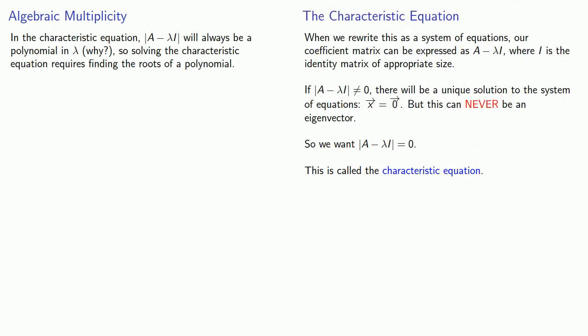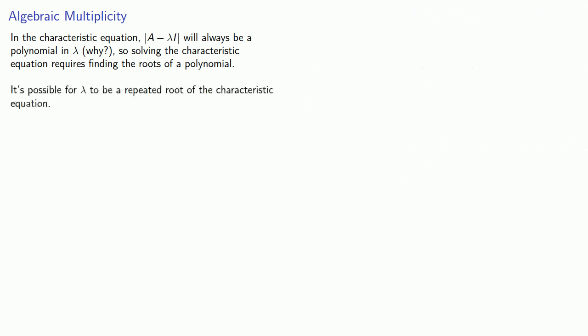First, remember that our characteristic equation is going to be the value of the determinant of A minus lambda times I. This will always be a polynomial in lambda. You should take a moment to understand why this is the case. And that means that solving the characteristic equation requires finding the roots of a polynomial. It's possible for a value to be a repeated root of the characteristic equation.